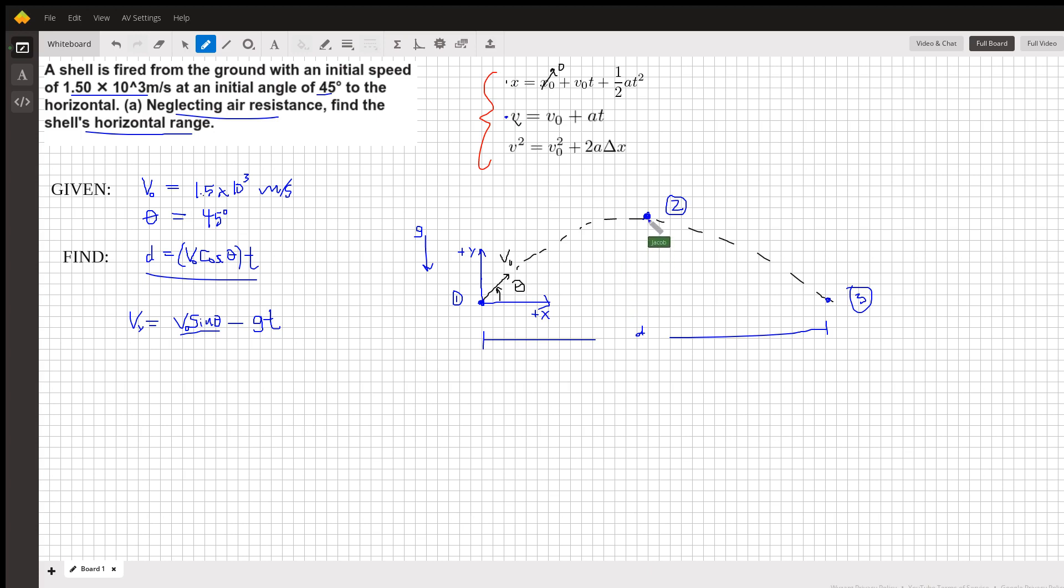The velocity in the y direction here is zero, so we can solve this equation by plugging in zero and solving for t. So we get v naught sine theta over g. But this is the time it takes to get from point one to point two. So let's write that there: point one to point two.